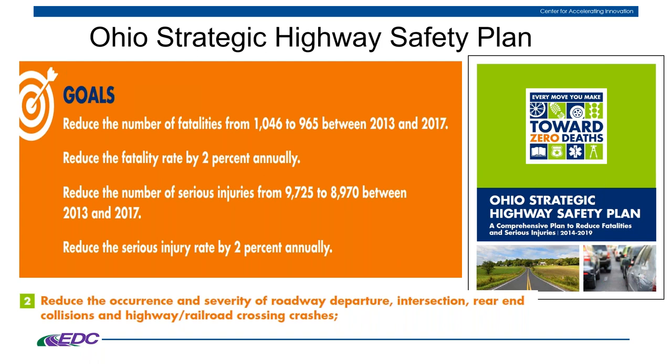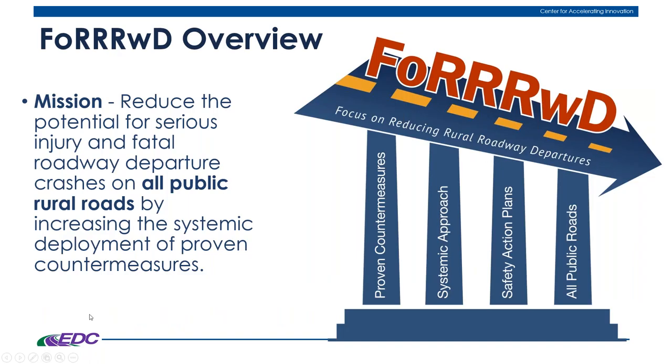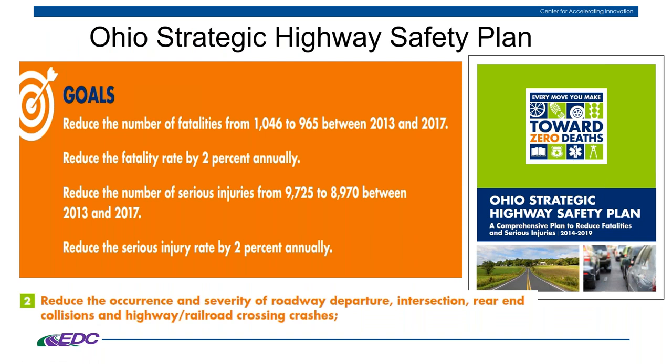At the statewide level, Ohio has a Strategic Highway Safety Plan, or SHSP, trying to move towards zero deaths — and we love your tagline 'every move you make towards zero deaths.' There are goals in the statewide plan to reduce the number of fatalities, the fatality rate, and also to reduce serious injuries, with emphasis areas that address serious crash types including roadway departure. Ohio at the statewide level is focusing on it, and we can see from your answers that many of you have already started as well.